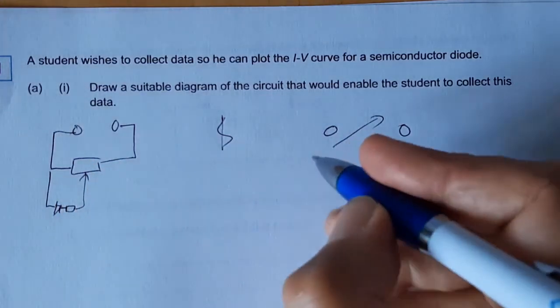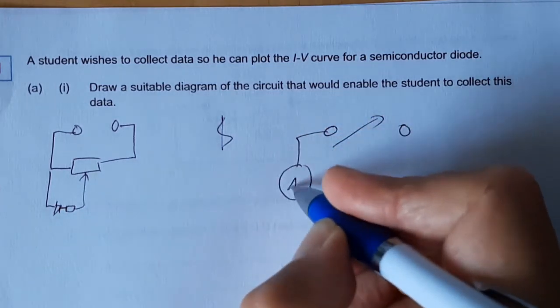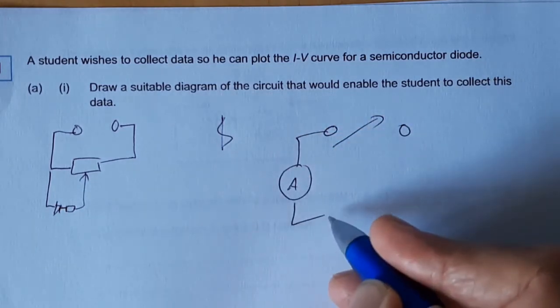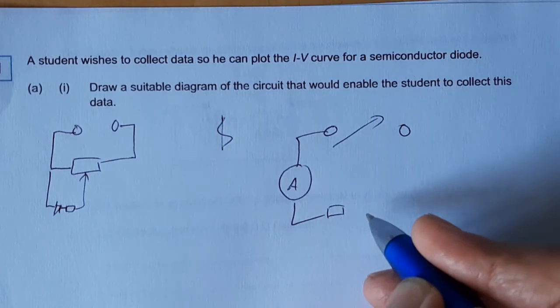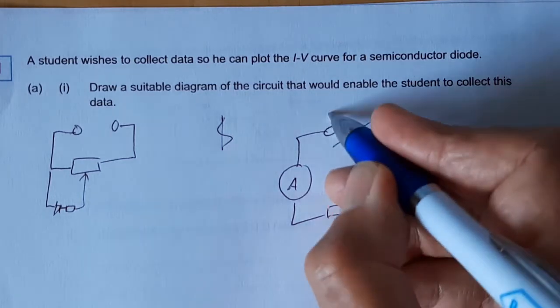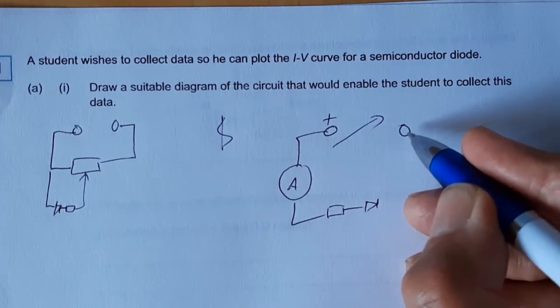We'll talk about that more later. So we're definitely going to need an ammeter, or I suppose in reality it'd be a micrometer. We have to have a resistor to protect the circuit and a diode. If we make that the plus side, you'll see why that's important.